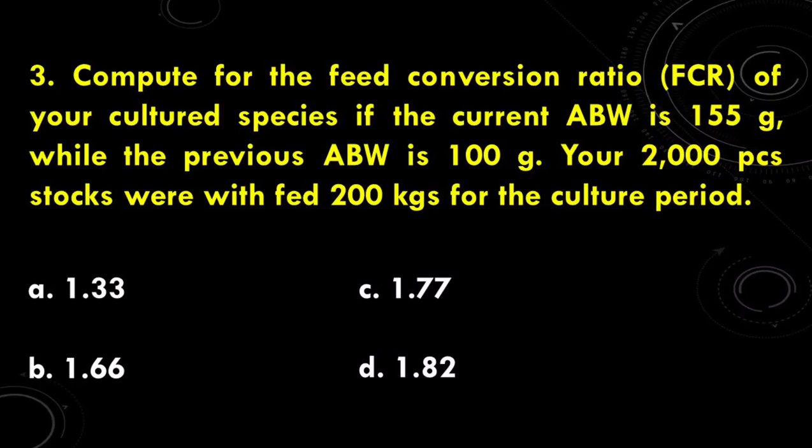Our third question is a problem solving. Compute for the feed conversion ratio or FCR of your cultured species if the current ABW is 155 grams, while the previous ABW is 100 grams. The 2000 pieces stocks were fed with 200 kilograms during the culture period. The options include: A. 1.33, B. 1.66, C. 1.77, and D. 1.82. The correct answer is D, 1.82.